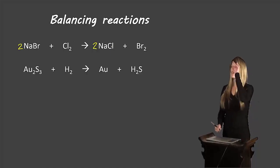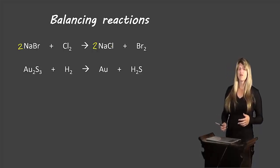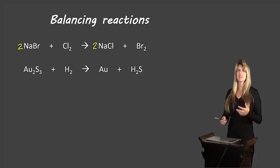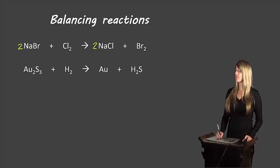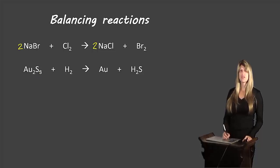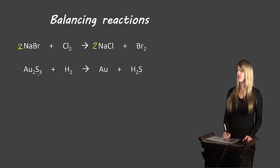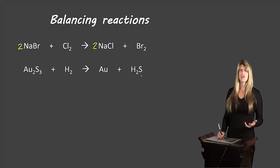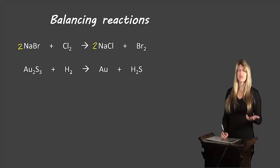Let's take a look at another example. Here we'll use one of the tips that can help you balance. Balancing involves a lot of practice and trial and error, but there are some tips. One of them is: if you look for elements that are always in compounds and never exist on their own, try to balance those first. So if we look at gold — here it's in a compound on one side but all by itself on the other — we might leave that one to balance until later. If we take a look at sulfur, it's in a compound on both sides, so we might want to start with that. If we look at hydrogen, it's all by itself on the left, so we can also leave that to later.